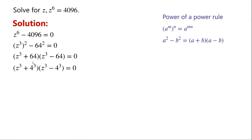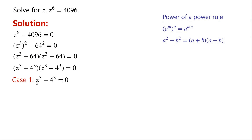64 can be written as 4 cubed. So either z cubed plus 4 cubed equals 0, or z cubed minus 4 cubed equals 0.